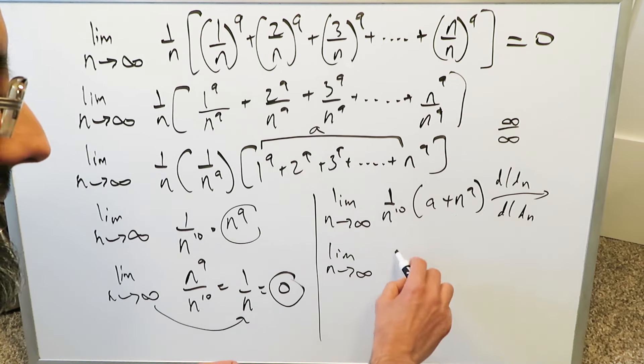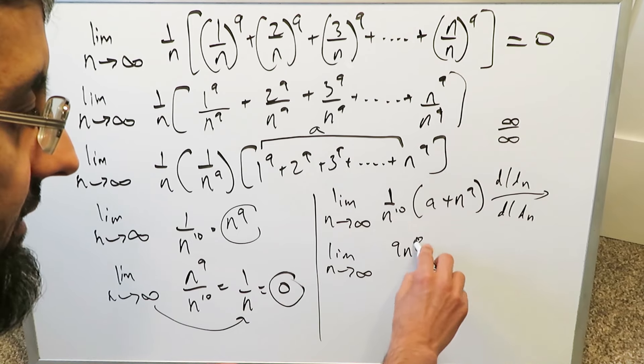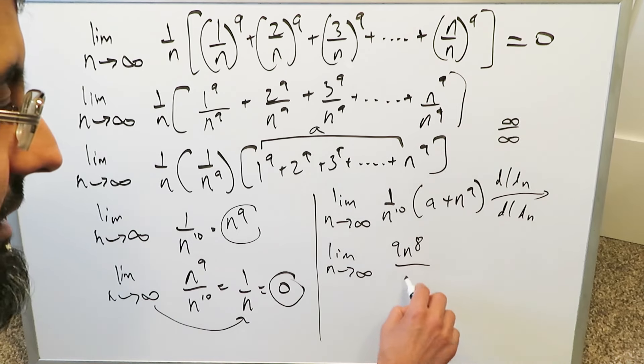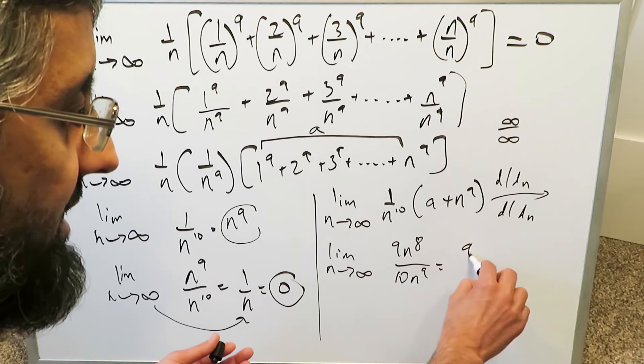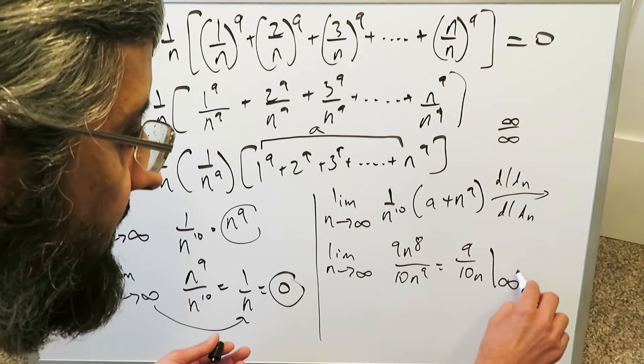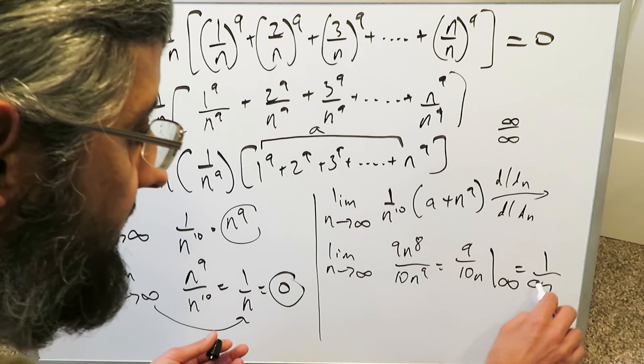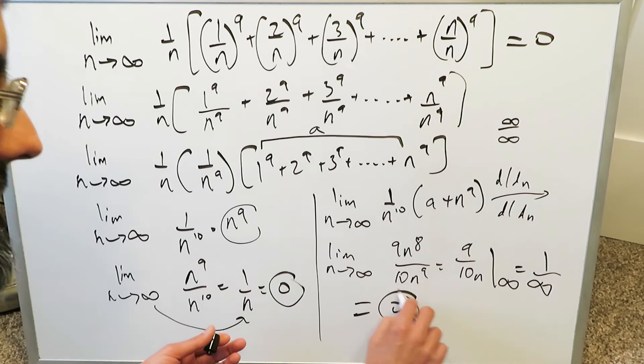The derivative of the denominator becomes 10 n to the power of 9. You could simplify this. You'd have 9 over 10 n, and then when you put infinity over here you're looking at really one over infinity which again 0 comes out.